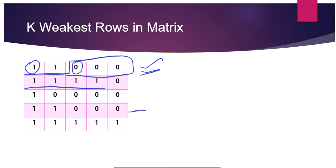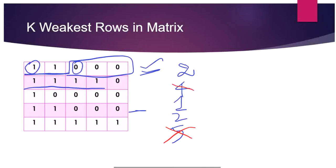In this example, the first row has two soldiers, the second row has four, the third row has one, the fourth row again has two soldiers, and the fifth row has five soldiers. So we can eliminate row five with five soldiers and row two with four soldiers, as they have many soldiers. We are left with two, one, and two across three rows.